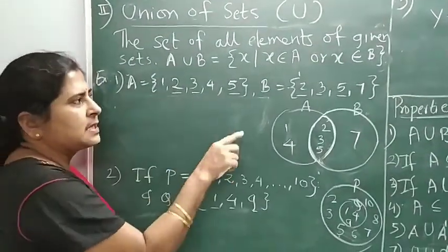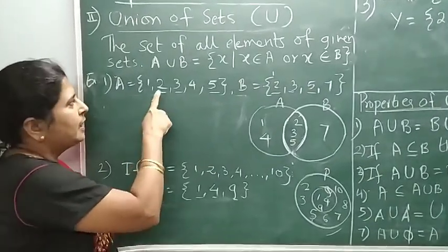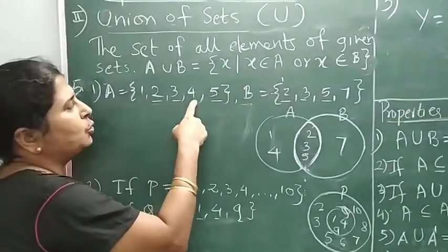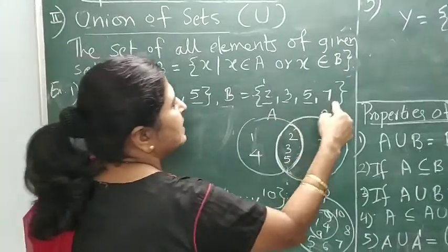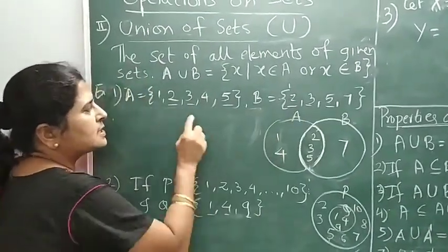Let's take the same example as we have taken for intersection in the previous video. Now set A is 1, 2, 3, 4, 5 and B is 2, 3, 5, 7. We have underlined the common elements.